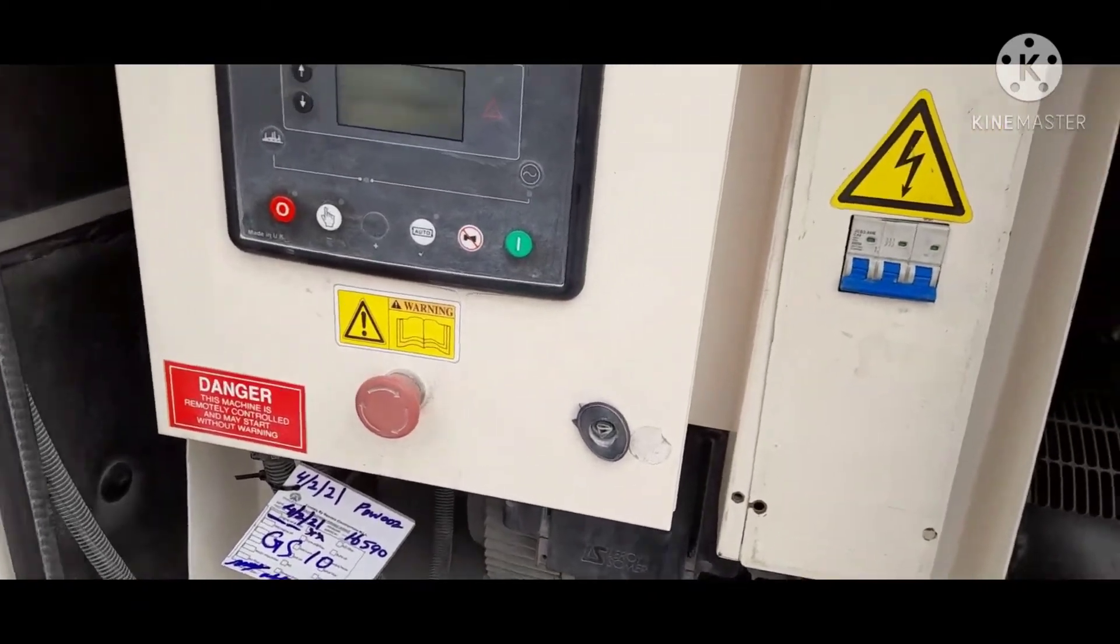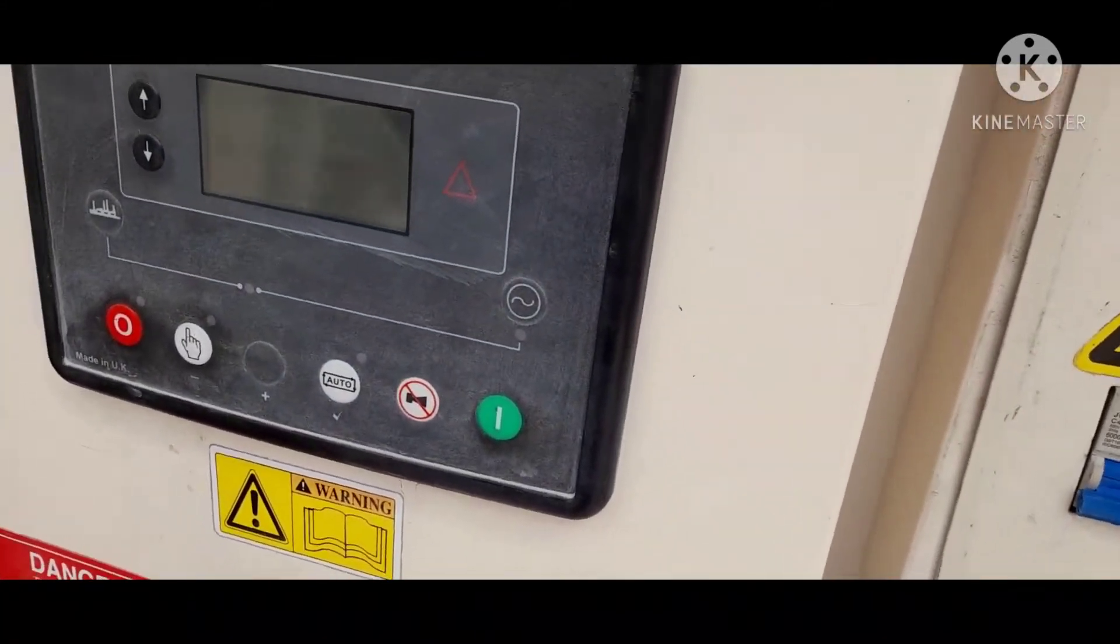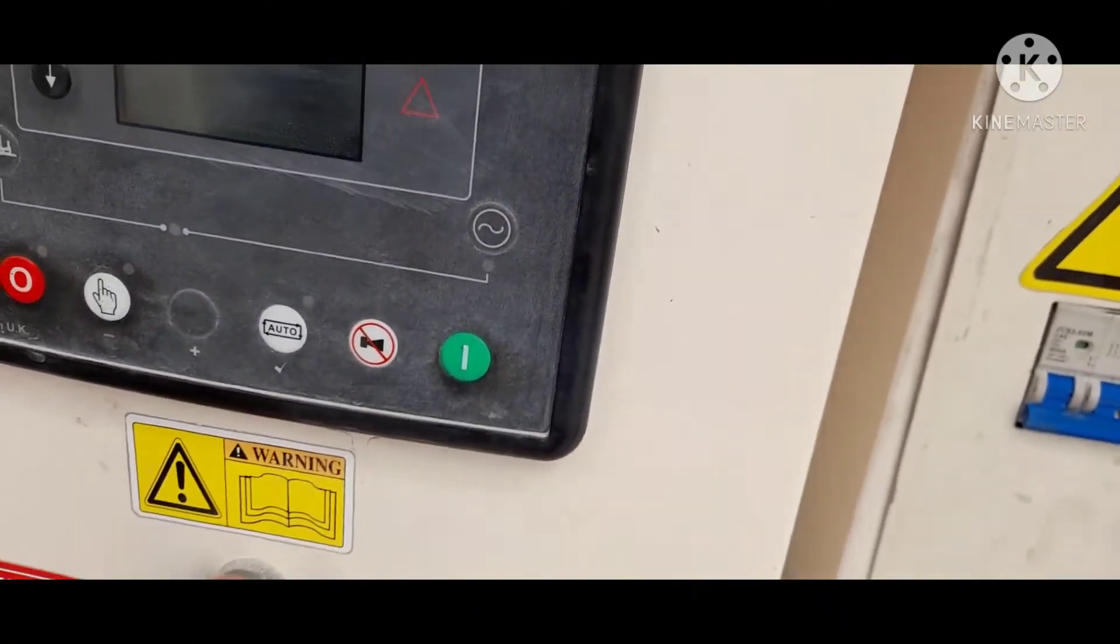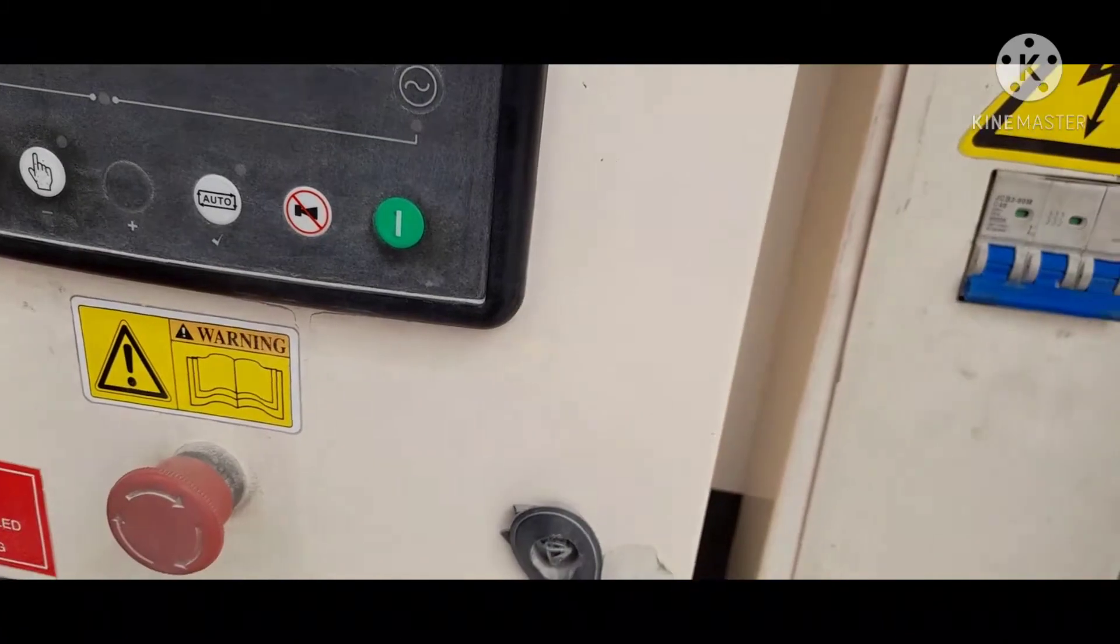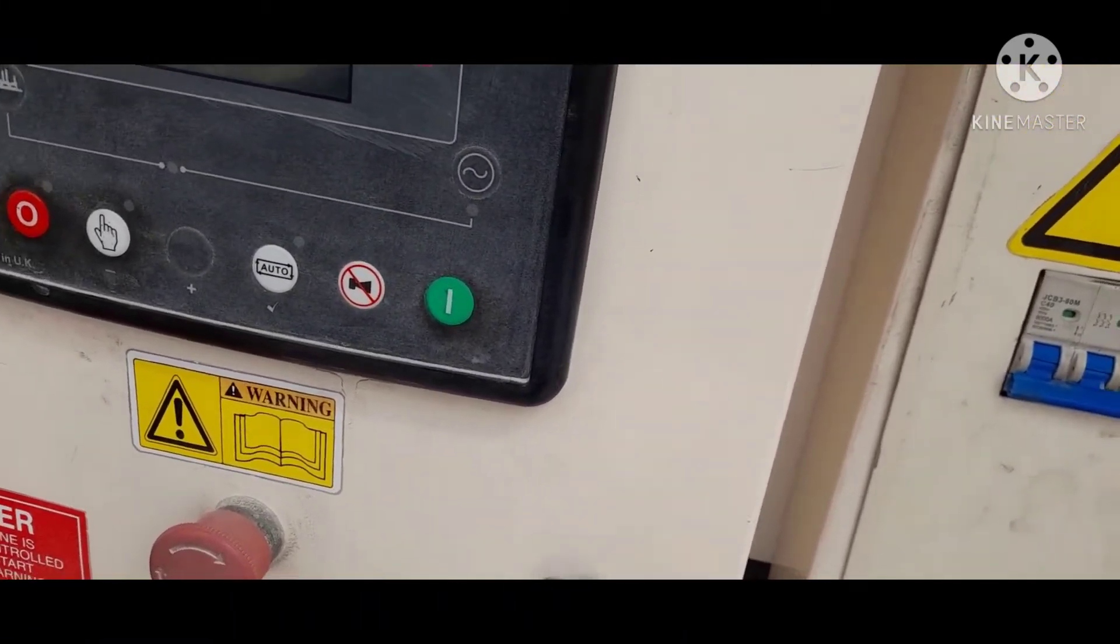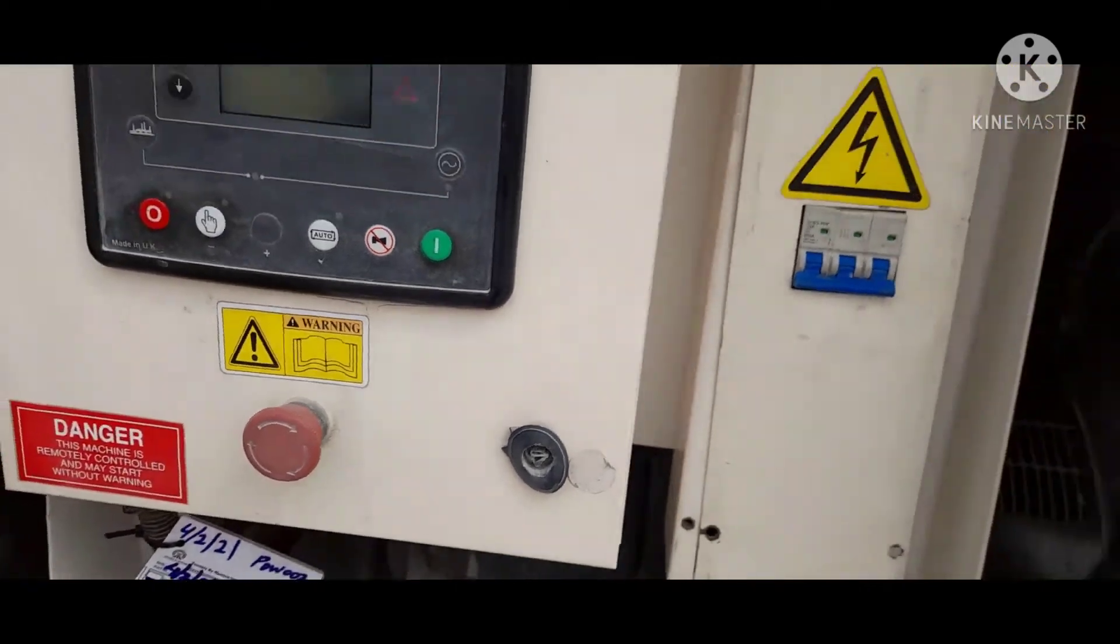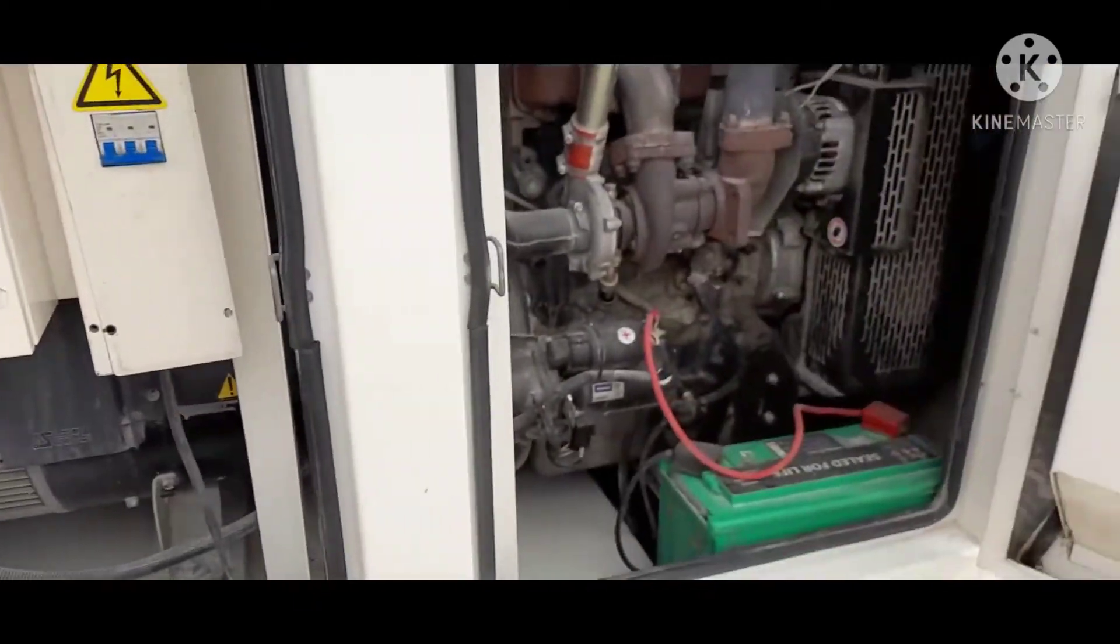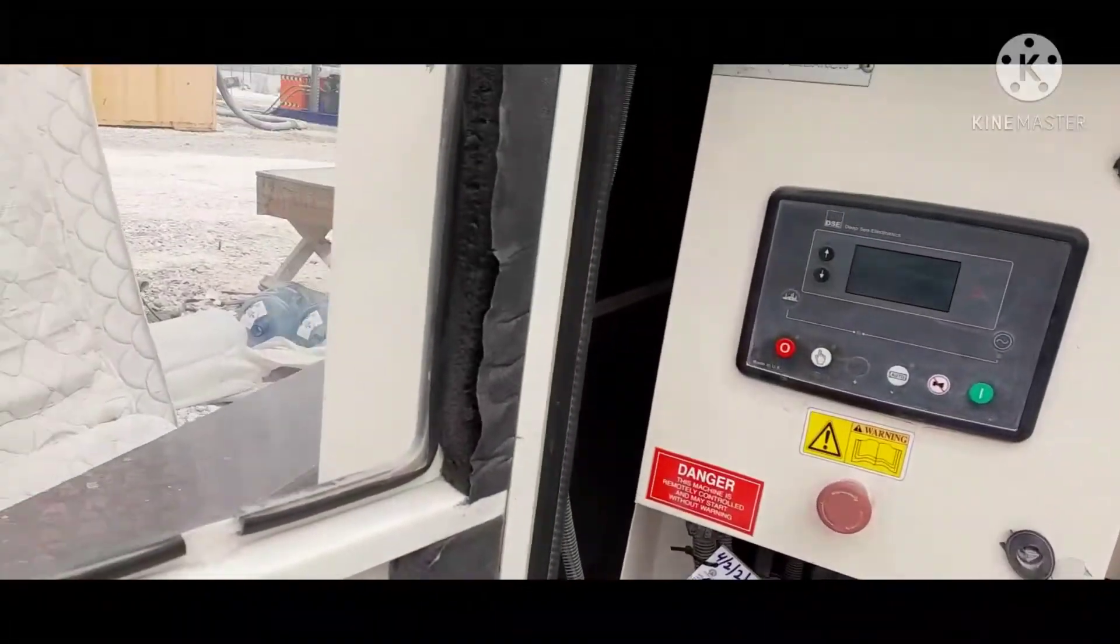Ngayon guys, umpisa na natin ang pagkabit ng ating supply doon sa ating cabin. Kukuha tayo ng single phase dito na supply, 220 volts. Kasi ito 440 volts, 3 phase itong generator natin. Ayan guys, generator unit namin dito sa aming cabin.